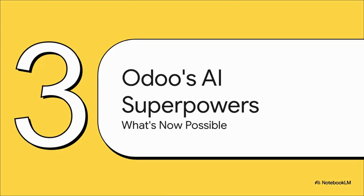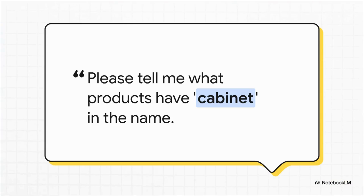What actually happens when you give Odoo these new AI superpowers? It all starts with questions as simple as this: instead of digging through menus and setting up filters, you can just ask in plain English. 'Show me all the products that have cabinet in the name,' or 'list every product with AI in its reference code.' The AI just understands your question and pulls the answer straight from Odoo for you.